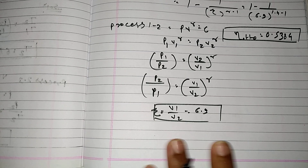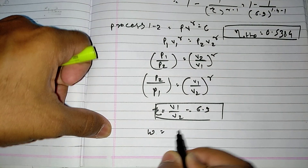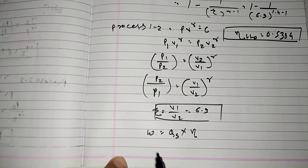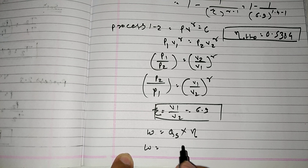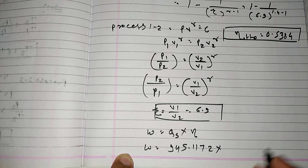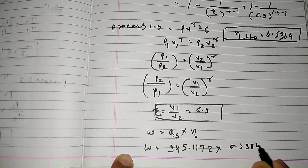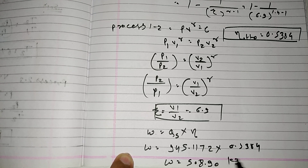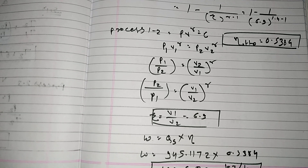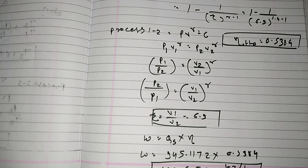Finally, work done = heat supplied times efficiency = 945.12 × 0.5384 = 508.90 kJ/kg. That's the complete numerical solution for the Otto cycle in IC engine module 1. If you like this video, please like, share, and subscribe to my channel. Thank you.